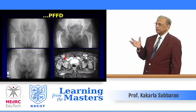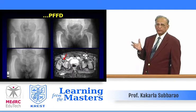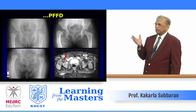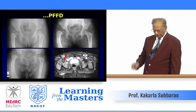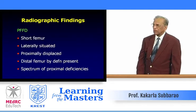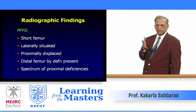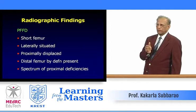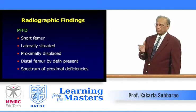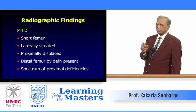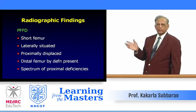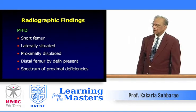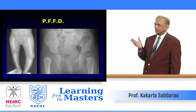These are the various morphological and diagnostic features of proximal femoral focal deficiency. MRI shows the cartilage portion of the femoral head. Conventional radiographic findings include short femur due to proximal deficiency, lateral and proximal displacement, and distal femoral segment present to varying degrees. The spectrum of proximal deficiency ranges from 1 mm to 10 cm.